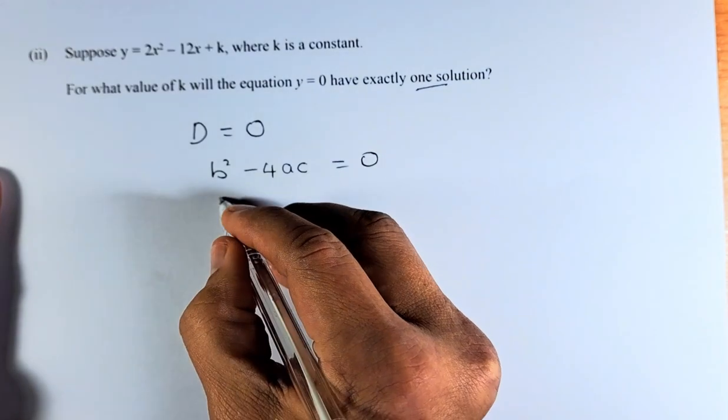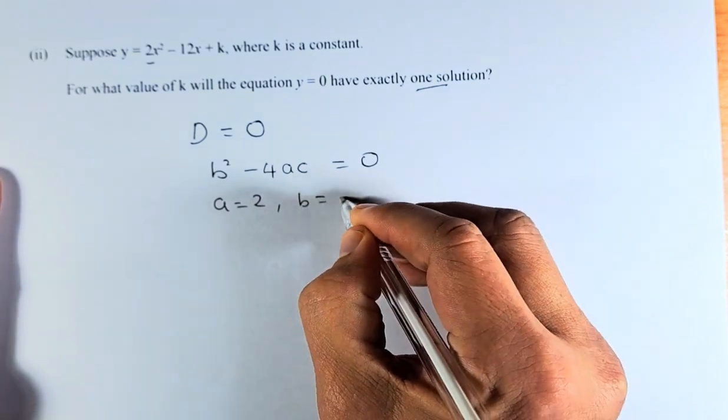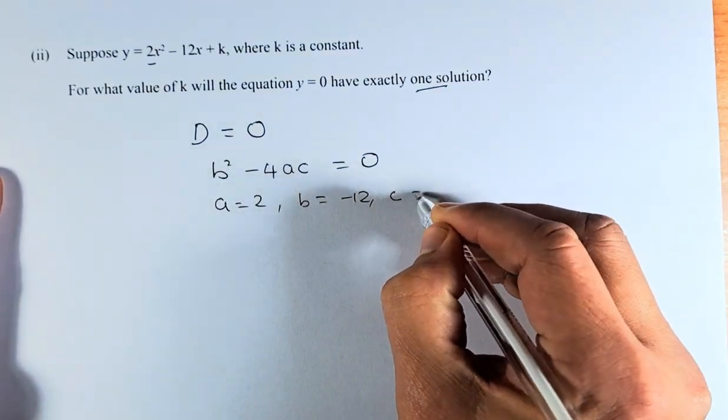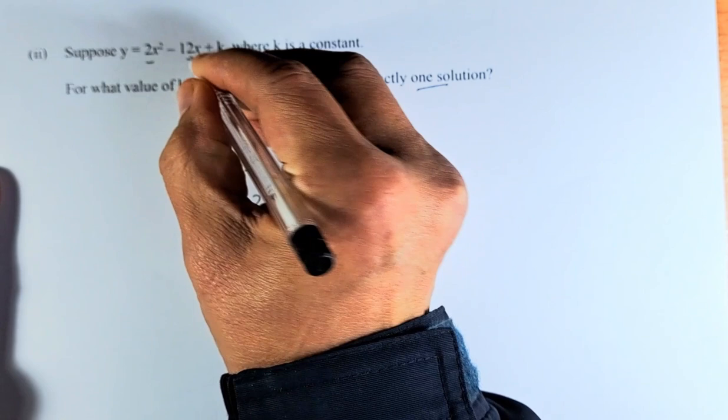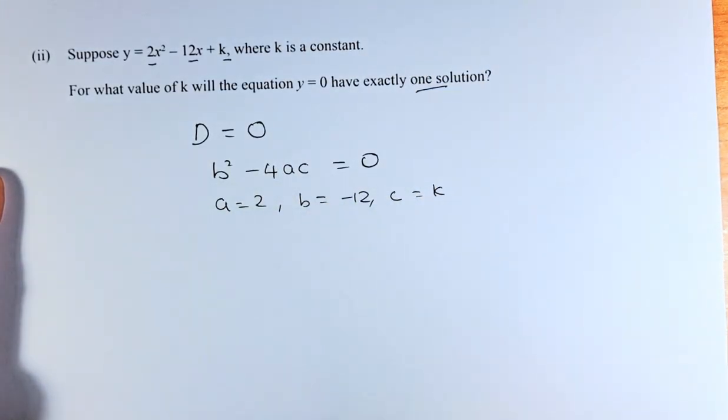So your a, your first value is 2, your a is 2, your b is -12, and your constant is represented by k. So now we are going to substitute a, b, and c into this discriminant equation.